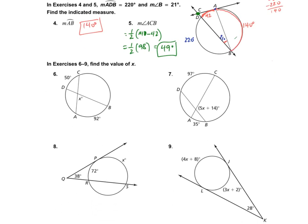For numbers 6 through 9, we need to find the value of X. For number 6, they intersect on the inside, so I add the two arcs. X equals one-half of 50 plus 92. That sum is 142, and half of 142 is 71. So X equals 71 degrees.